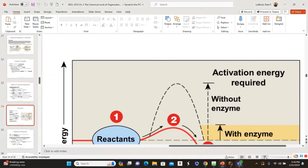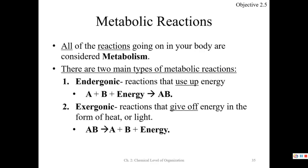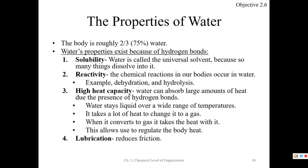Metabolism is the sum total of all the chemical reactions happening in a body. All the reactions going on in your body — that's metabolism. These metabolic reactions are one of two kinds: endergonic reactions use up energy — literally 'inward energy' — like A + B + energy → AB. Exergonic reactions give off energy like heat or light — literally 'outward energy' — like AB → A + B + energy. We're going to end here and start with water in the next lecture. We are now halfway through the chemistry.